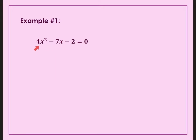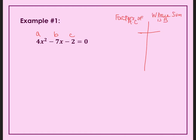So do I have a GCF? Is there a number that goes into 4, negative 7, and negative 2? The answer is no. So I'm going to go ahead and label my A, my B, and my C. For every problem I'm going to make a table. I want to know what are factors of AC but whose sum is B. So we're going to take A times C — 4 times negative 2 — which gives us factors of negative 8.